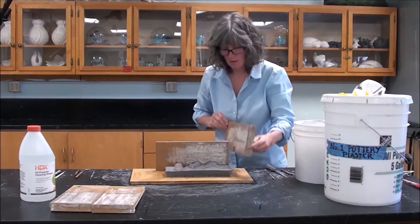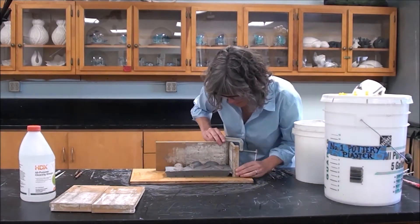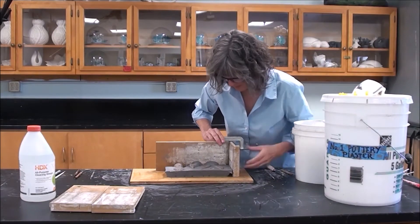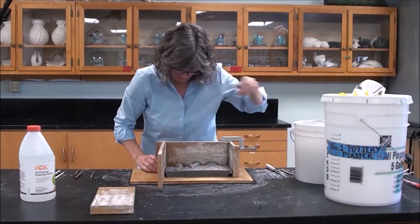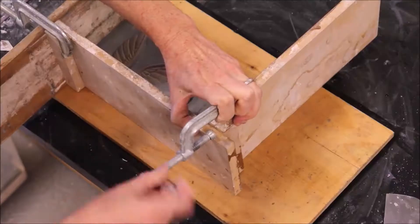The thing that makes Number One Pottery Plaster so great is that it's very porous, and this is what you really want when you're slip casting. The way it works is the Number One Pottery Plaster acts like a gigantic sponge. It sucks the water out of the slip, turning it into clay.